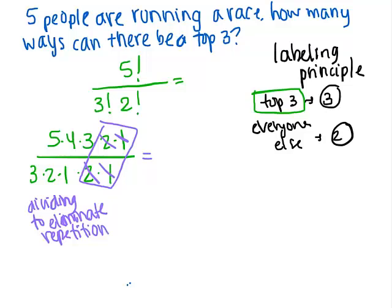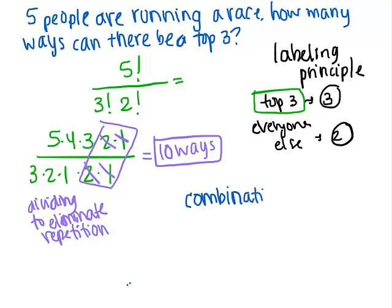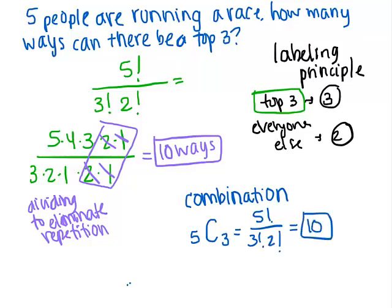That's going to come out to be ten. Which makes sense — there should always be fewer results when you don't care about the order. The word we use when we don't care about the order is combination, because you're combining the things that are coming in. The calculator uses a big C for that: 5C3. The calculator knows this formula and plugs in five factorial over three factorial times two factorial, and spits out ten. You'll always have fewer combinations than permutations because you're not caring about the order in which things are happening.